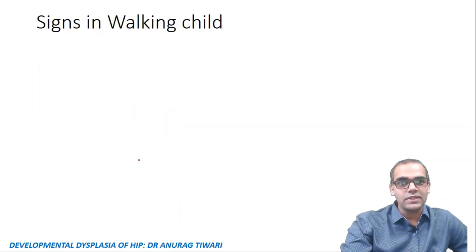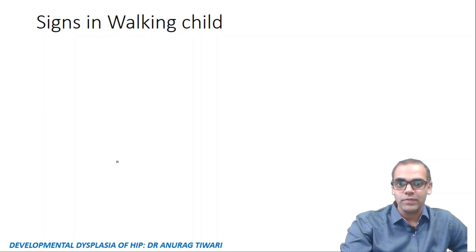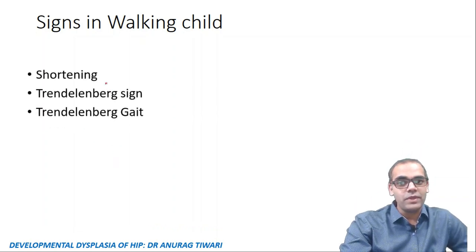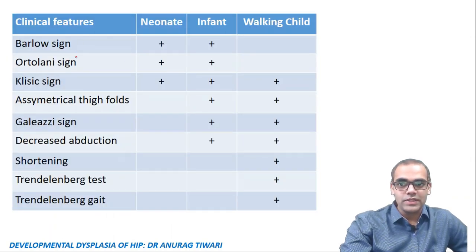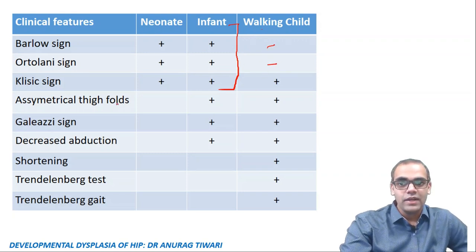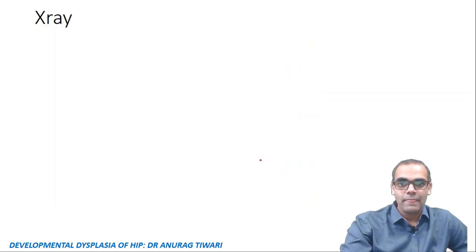In the walking child, Barlow and Ortolani tests are negative because soft tissue contracture prevents reduction. Signs in walking-age children include profound limb shortening, Trendelenburg sign, and Trendelenburg gait. If DDH is bilateral, there will be a waddling gait. To summarize: Barlow, Ortolani, and Classic sign are positive up to infant age, while shortening and Trendelenburg signs are positive in the walking child.